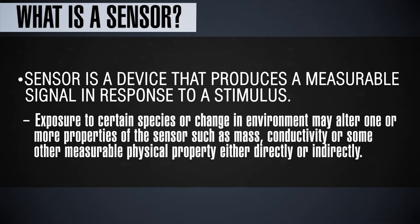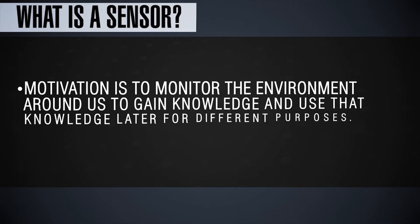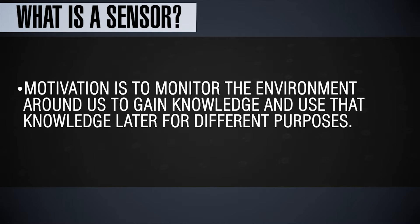Many properties change when the environment changes — the sensor will respond to that change through a change in mass or conductivity or some other measurable property, either directly or indirectly. The motivation to have a sensor is to monitor the environment surrounding us in order to gain knowledge and use that knowledge for a useful purpose.